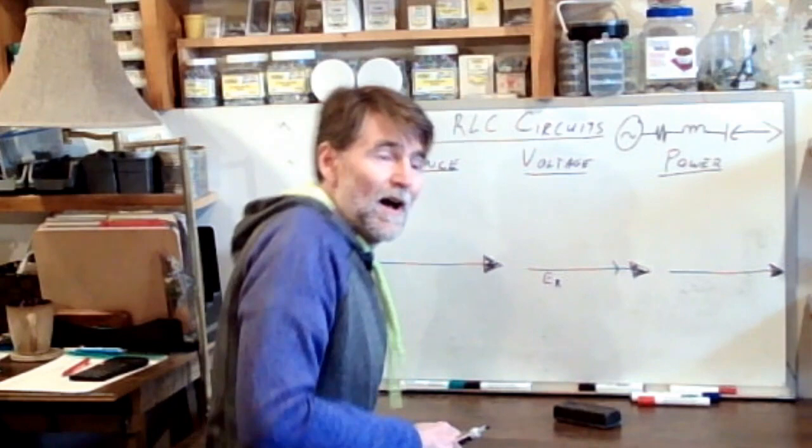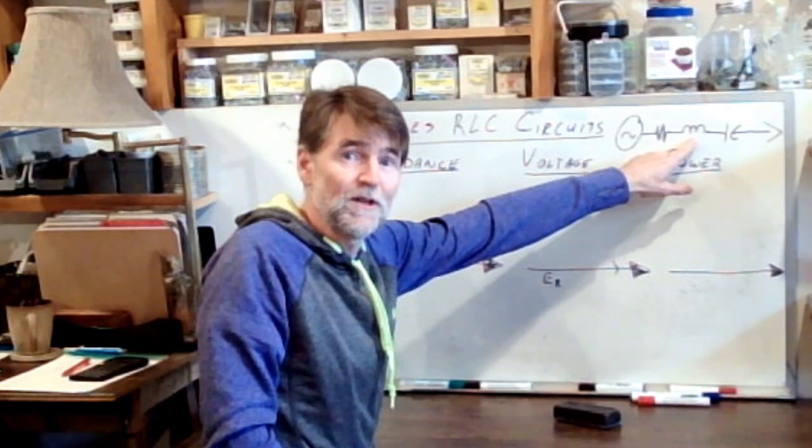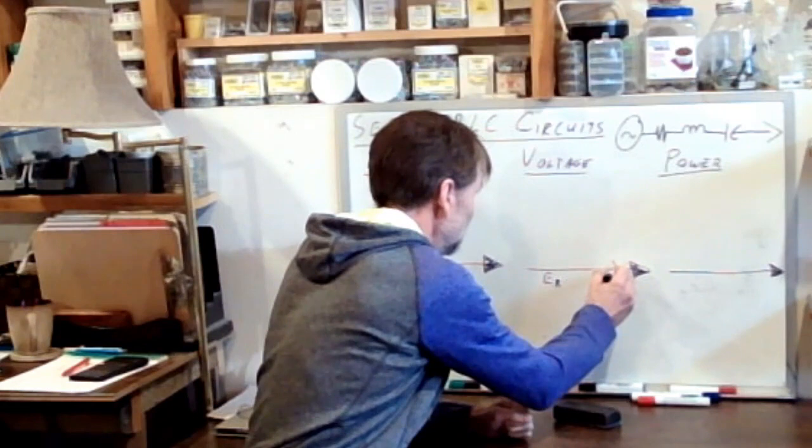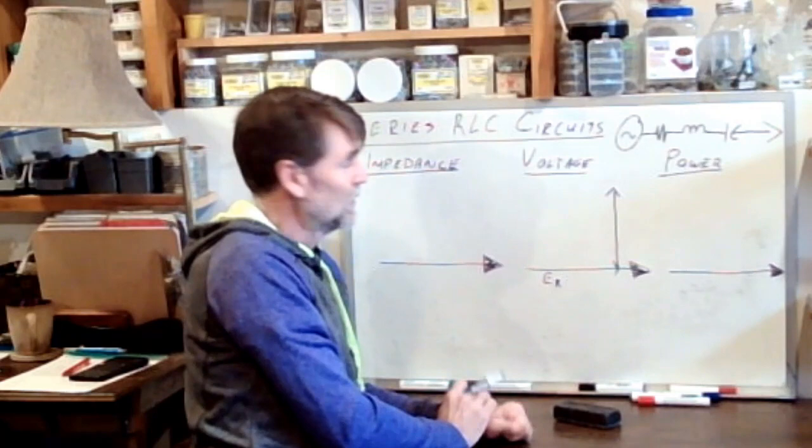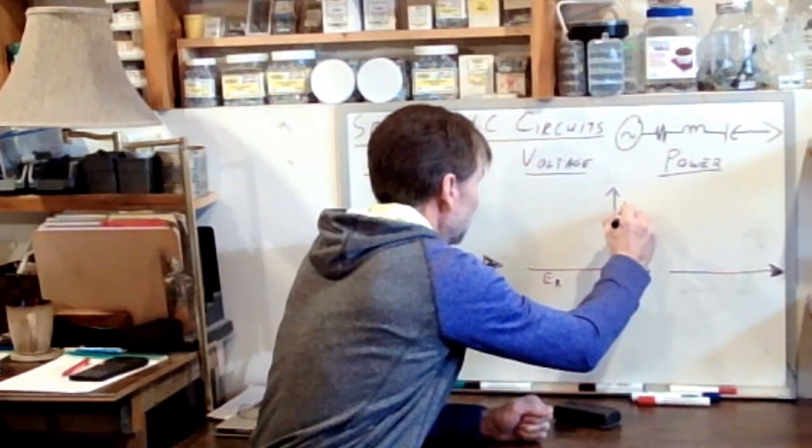Just like before, just like in the series RL circuit and the series RC circuit, and now here again in the series RLC circuit, the voltage dropped across the resistor is going to be in phase with the current. Now we look at Eli the Iceman. The voltage dropped across the inductor, the voltage is going to lead the current. So there it is, at 90 degrees, the voltage vector leading the current vector, EL.